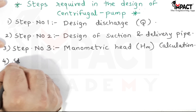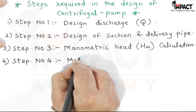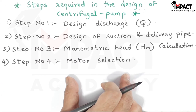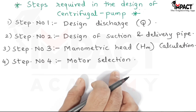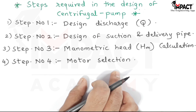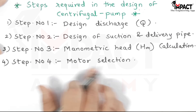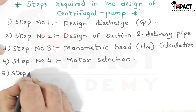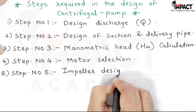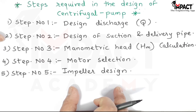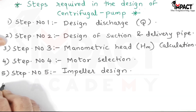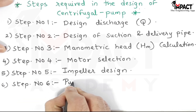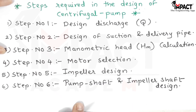Step four is motor selection — we decide how much power the motor requires and what RPM the shaft runs at. Since the motor and impeller are directly coupled, the shaft RPM equals the impeller RPM. Step five is impeller design, where we determine the dimensions and shape of the impeller.